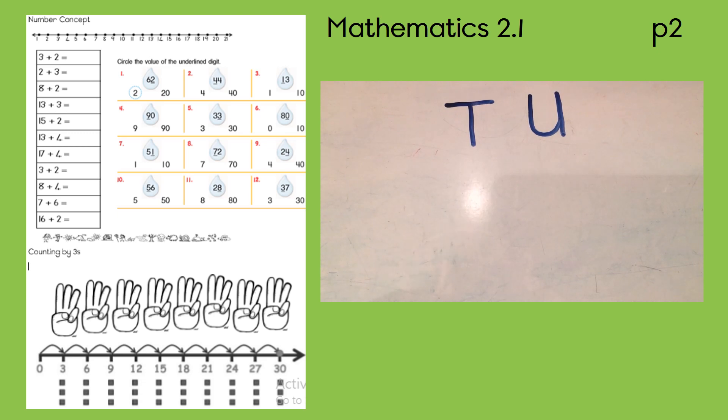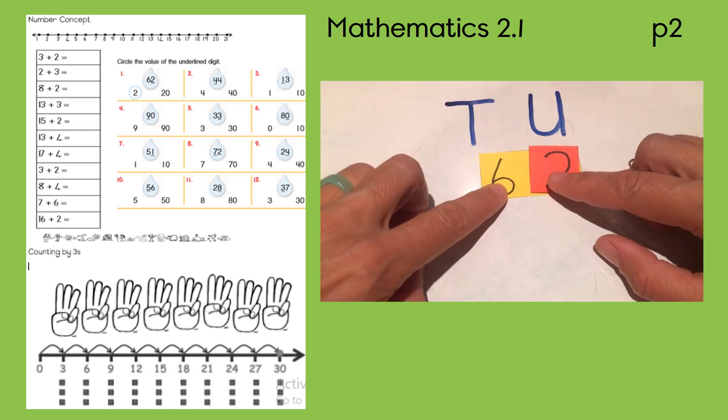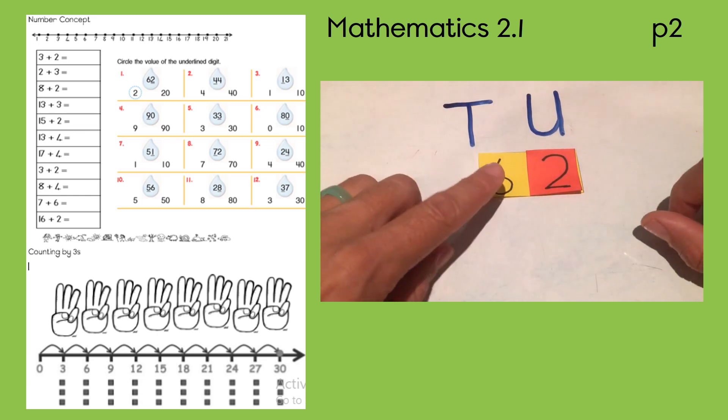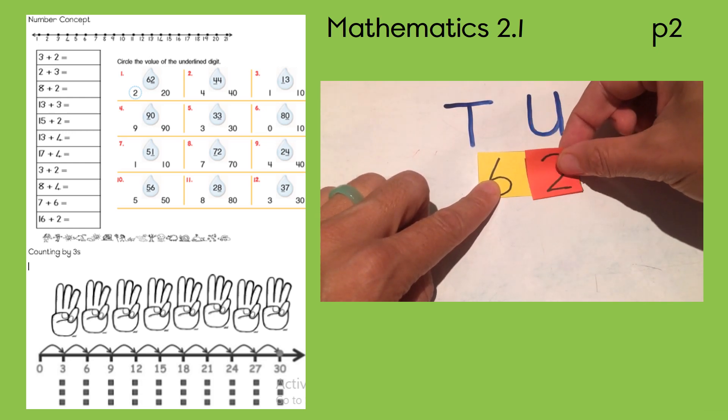The next activity is about place value. Remember place value is about tens and units. What's the value of the number? So if we look at the example they give us, it is 62. Now in this number, the six actually means 60 and the two is the unit.